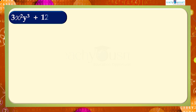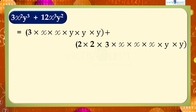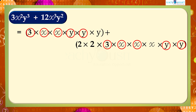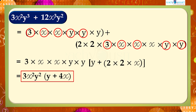Therefore, 3x²y³ + 12x³y² can be written out with all factors expanded. Here we can see that in both terms, 3, x·x, and y·y are common. So it becomes 3·x·x·y·y·(y + 2·2·x), which equals 3x²y²·(y + 4x). This is the required factor form of 3x²y³ + 12x³y².